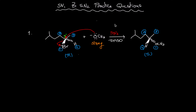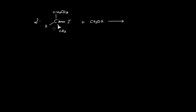We should not forget that we also have Br⁻ on the product side. Let's discuss another example where the alkyl halide is also a second degree alkyl halide, however the nucleophile is methanol — a neutral nucleophile — and therefore this is going to be a weak nucleophile. Remember always that charged nucleophiles are always stronger than neutral nucleophiles.